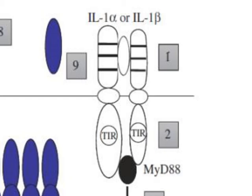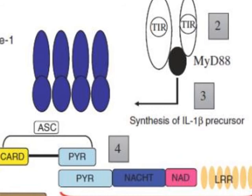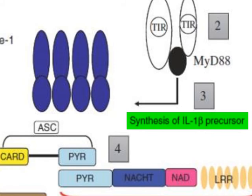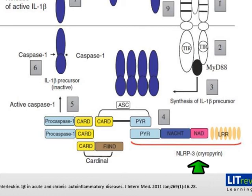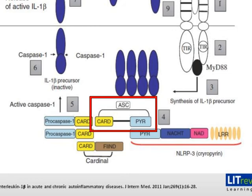In number 3, following MyD88 recruitment, NF-kappa-B or AP-1 translocate to the nucleus, and the IL-1 beta precursor is synthesized. At number 4, there is a large red oval which basically represents the inflammasome — in this example, the NLRP3 inflammasome. The inflammasome is an intracellular multiprotein complex composed of several components: NLRP3 or cryopyrin, an adapter protein called ASC (apoptosis-associated speck protein with a caspase activation and recruitment domain), and pro-caspase-1.